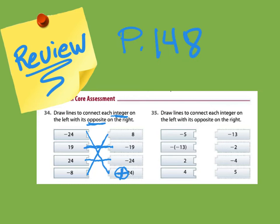Please go ahead and do number 35 on your own, then unpause when done. Welcome back — negative 5 and 5 are opposites, 4 and negative 4, 2 and negative 2 are both pairs. Remember two negatives make a positive, so then 13 and negative 13 would be opposites.